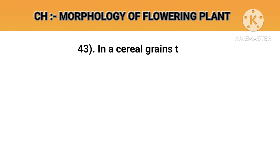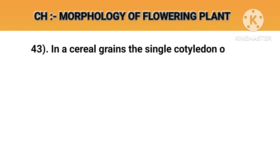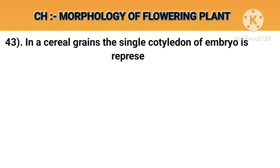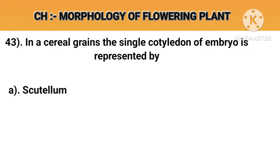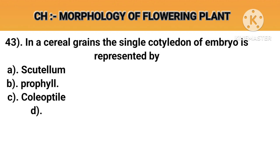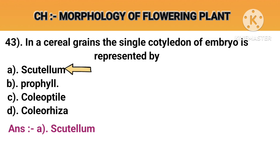Question number 43. In cereal grains, the single cotyledon of the embryo is represented by. Option A: Scutellum. Option B: Prophyll. Option C: Coleoptile. Option D: Coleoptile. Answer A: Scutellum.